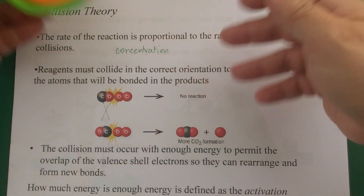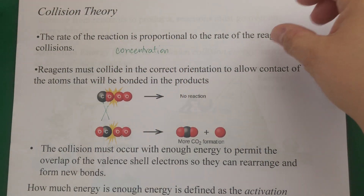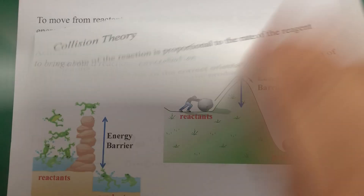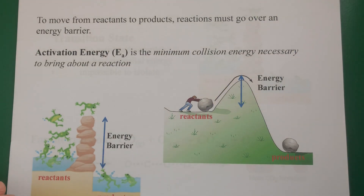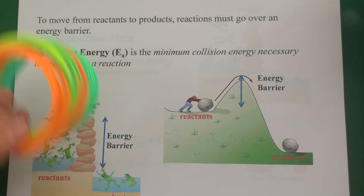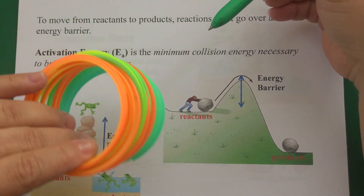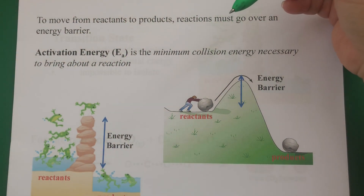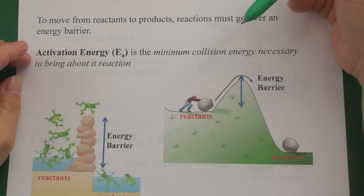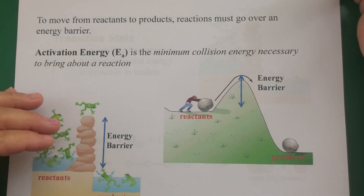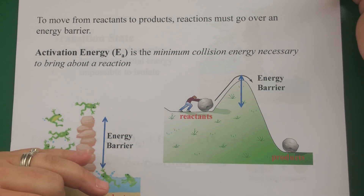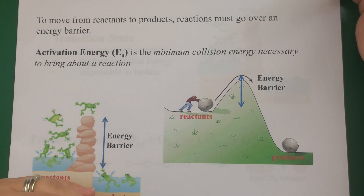How much energy does that impact need in order to push through and actually merge those valence shells? That's given by the activation energy — it's the energy barrier that reagents must overcome in order to react.